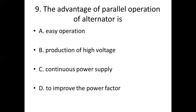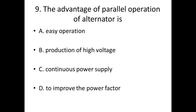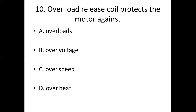Ninth bit. The advantage of parallel operation of alternator is. Option A: Easy operation. Option B: Production of high voltage. Option C: Continuous power supply. Option D: To improve the power factor. Answer: Option C. Continuous power supply.